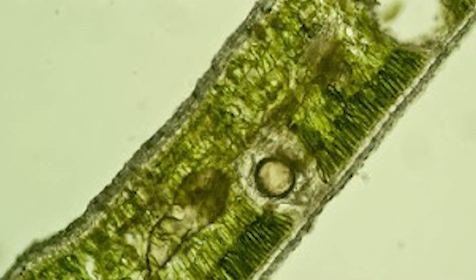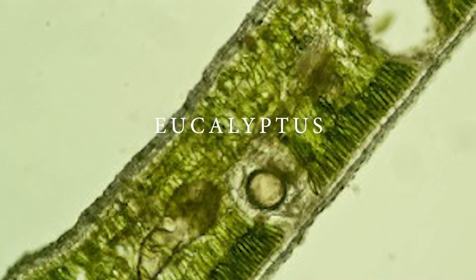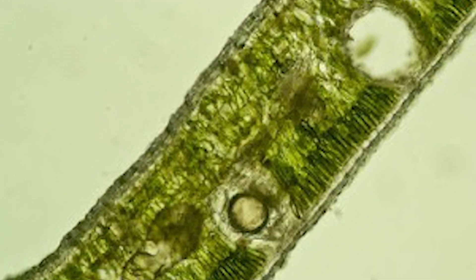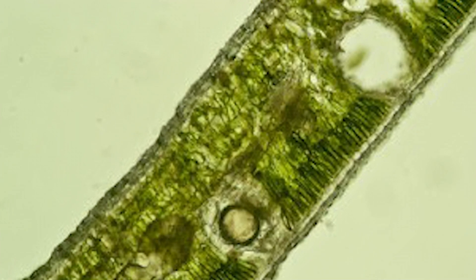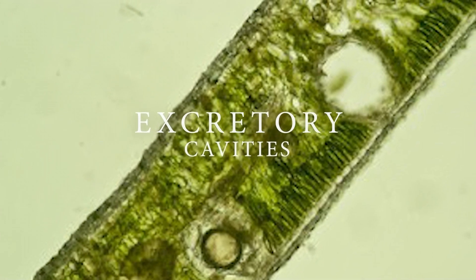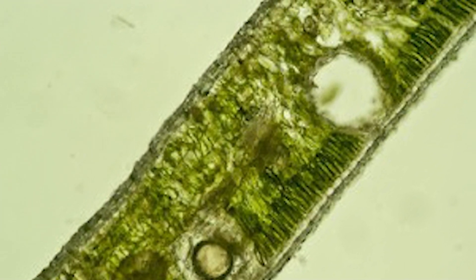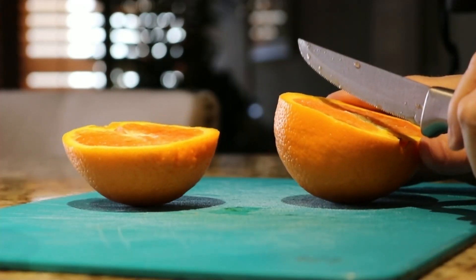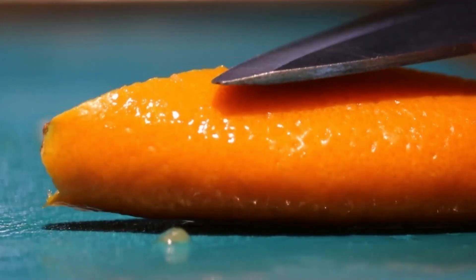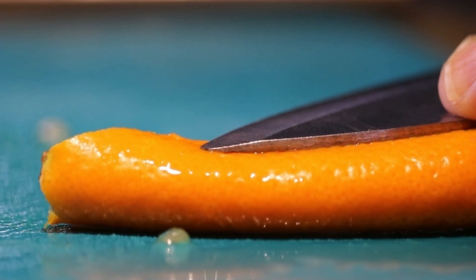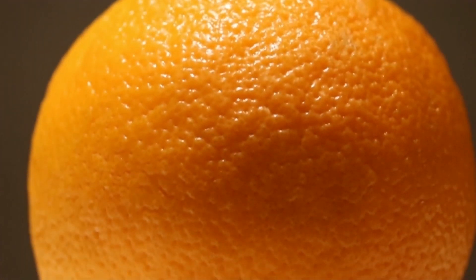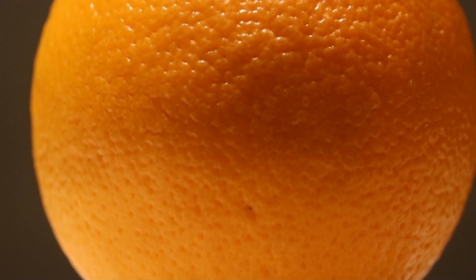Looking at eucalyptus, you can see it possesses a cavity surrounded by a large number of oil-producing cells within the plant structure. These are so-called excretory cavities, where the plant produces and stores the essential oil. If you've ever picked up an orange and squeezed it with your nail, sometimes that juice will come out — that's in fact the essential oil.